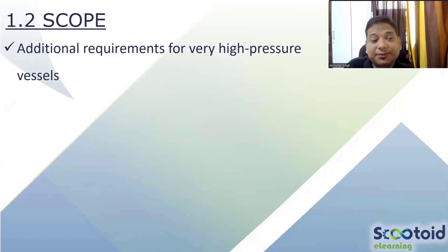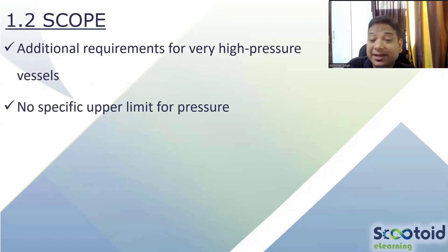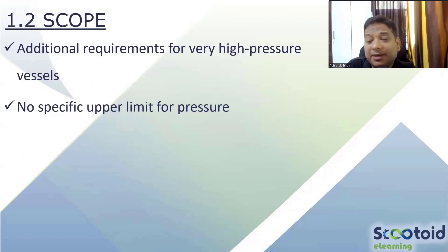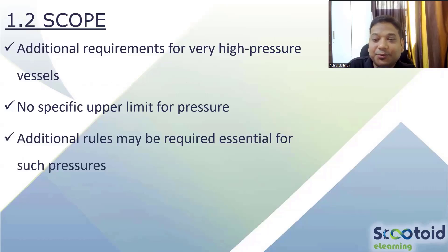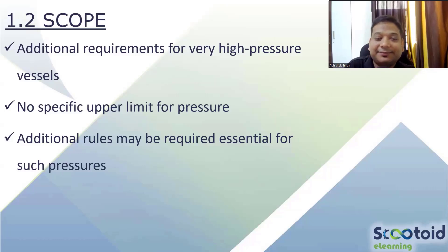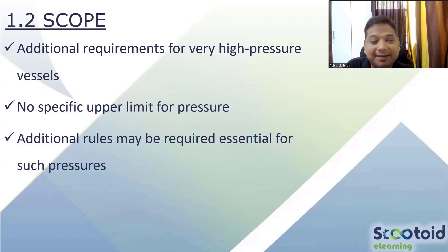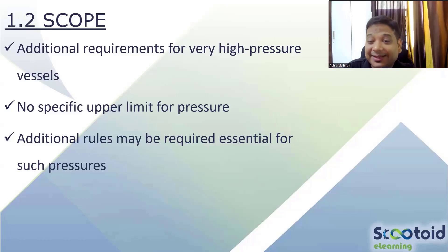High pressure vessels also fall within scope; Division 2 includes additional requirements applicable for high pressure. Importantly, in Division 2 there is no upper limit of pressure — remember that. However, there is a catch. For Division 1 the upper limit is 3,000 PSI or 20 MPa — what about Division 2? Think about whether there is any upper limit mentioned.